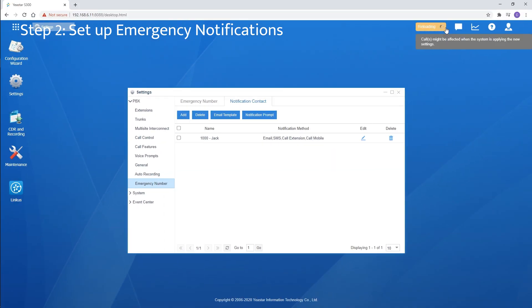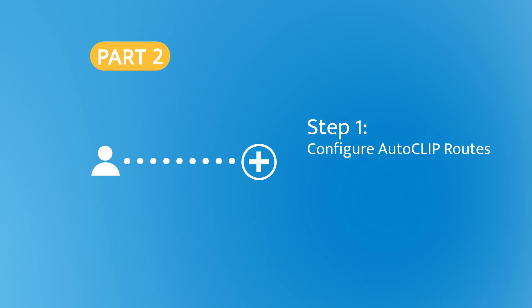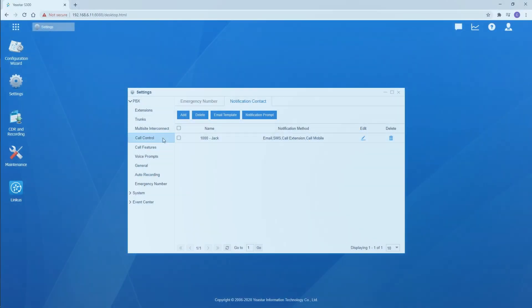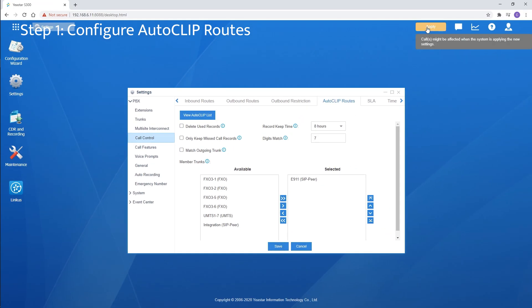Now emergency calls can be made following Carey's law. To ensure that a public safety answering point can call back to the original caller in case the original caller is unreachable, we need to configure autoclip routes. Also create an inbound route to connect personnel responsible for 911 callbacks, such as the security dispatcher. Get to the autoclip setting page, select the trunk with E-Links, and click on Save and Apply.